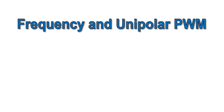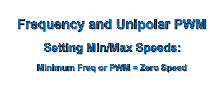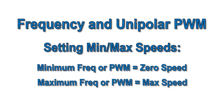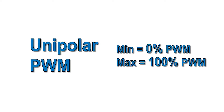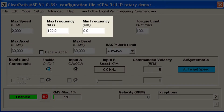Frequency mode and Unipolar PWM mode work in a similar way. You have defined minimum and maximum frequencies, or PWM duty cycles, and they correspond to zero speed and your user-defined max speed, respectively. For Unipolar PWM, the minimum and maximum duty cycles are fixed at 0% and 100%. For Frequency, the minimum and maximum are user-defined.